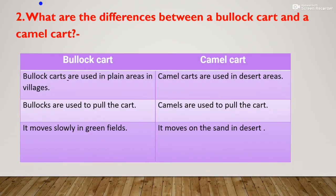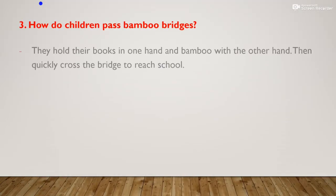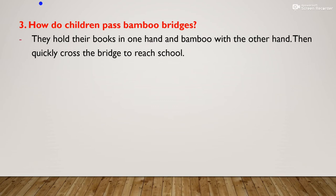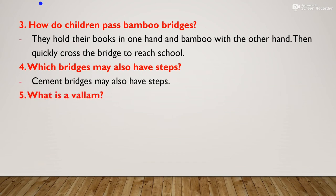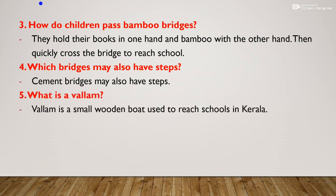What are the differences between a bullock cart and a camel cart? Bullock carts are used in plain areas in villages; camel carts are used in desert areas. Bullocks are used to pull the bullock cart; camels are used to pull the camel cart. Bullock carts move slowly through green fields while camel carts move on the sand in the desert. How do children pass bamboo bridges? They hold their books in one hand and a bamboo pole with the other hand, then quickly cross the bridge.